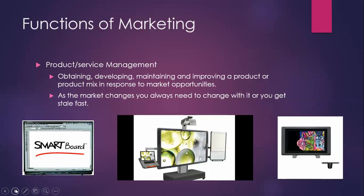The fifth piece is product/service management — how do you obtain, develop, maintain, and improve a product or product mix in response to market opportunities? As the market changes, you need to be changing with it. One example is Smart boards: they were the original interactive whiteboard, so cutting edge that Calgary Academy was one of the first schools in Canada to get them. But today Smart is almost falling behind because they haven't put as much research and development into their tools as newer companies. So if Smart can't offer what's needed out there, you'll find that changing very quickly.